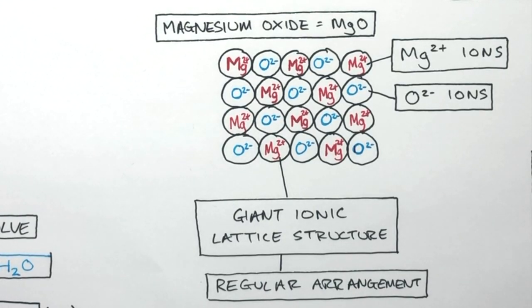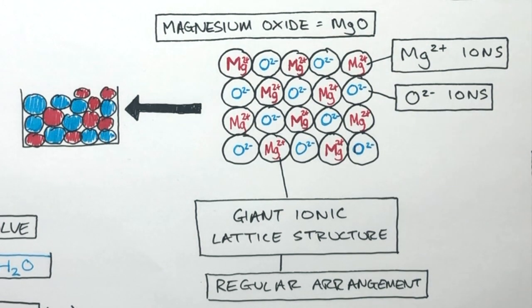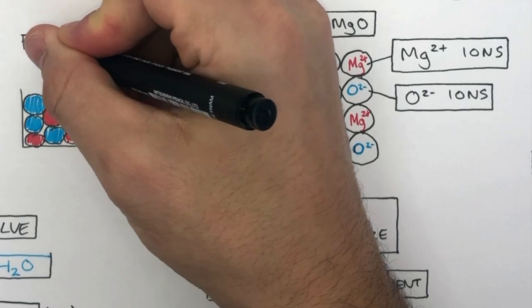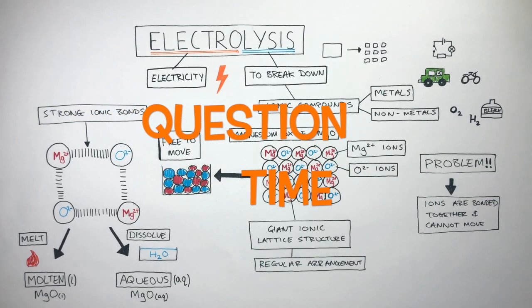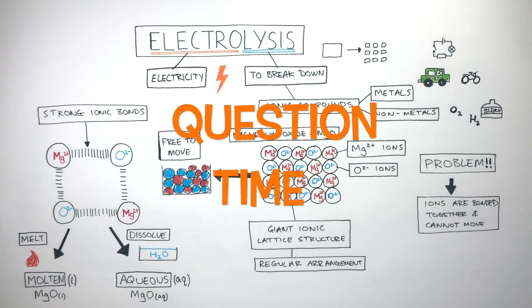So once the particle diagram looks something like this, a liquid or aqueous, this means the particles are free to move and electrolysis can now work. It's question time. Attempt these questions to check your understanding.